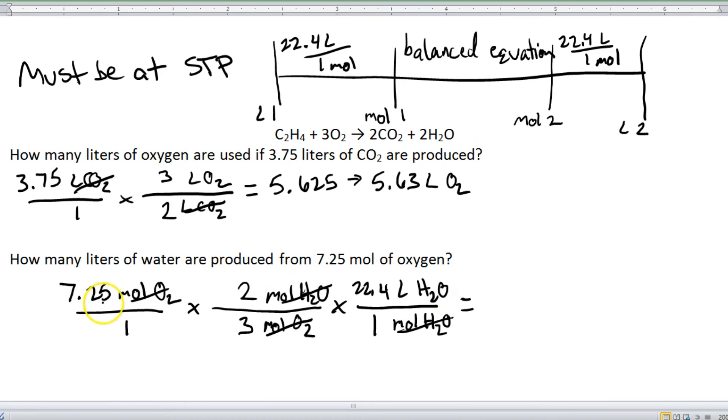So we're going to do 7.25 times 2 times 22.4, then divided by 3. And what we end up with is 108.27. But since we can only have three sig figs, we count 1, 2, 3. The next number is a 2, which means we round down. So this is 108, and our units are liters of H2O.